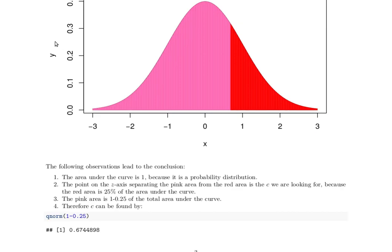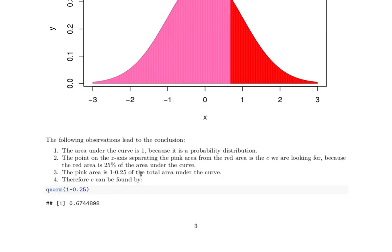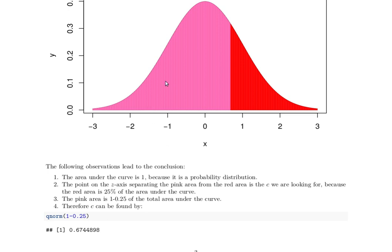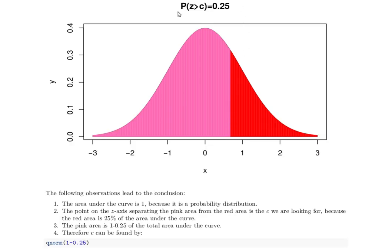Probability that Z is less than C is 75. So the area under the curve is 1 because it's a probability distribution. The point on the Z axis separating these two is the C value that we're looking for when we're trying to solve this problem.